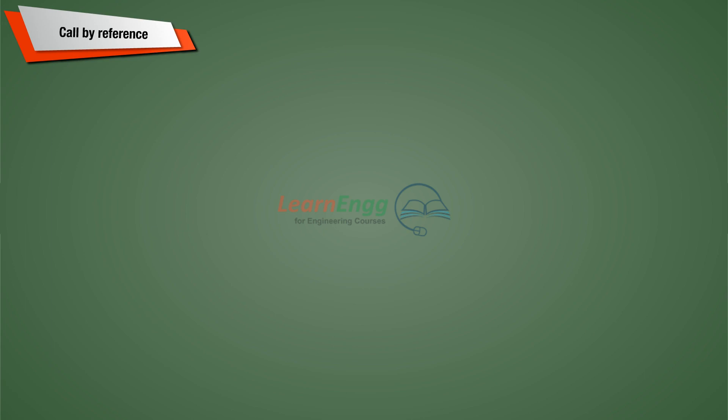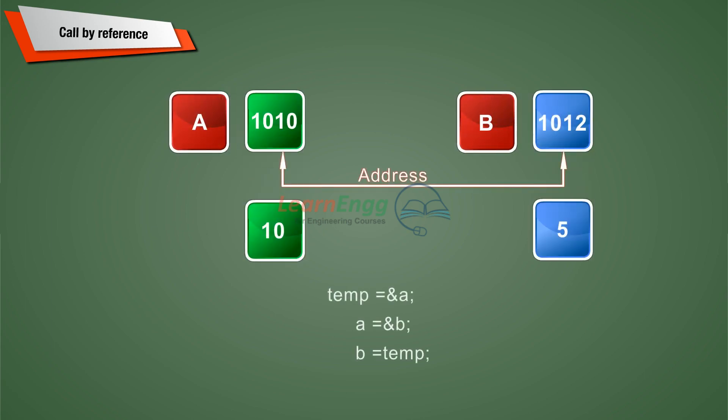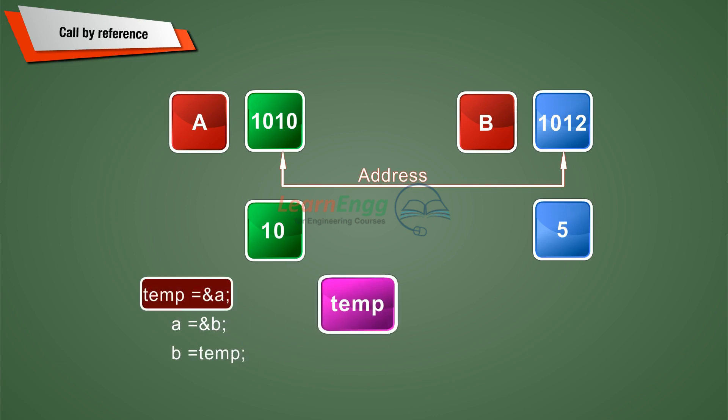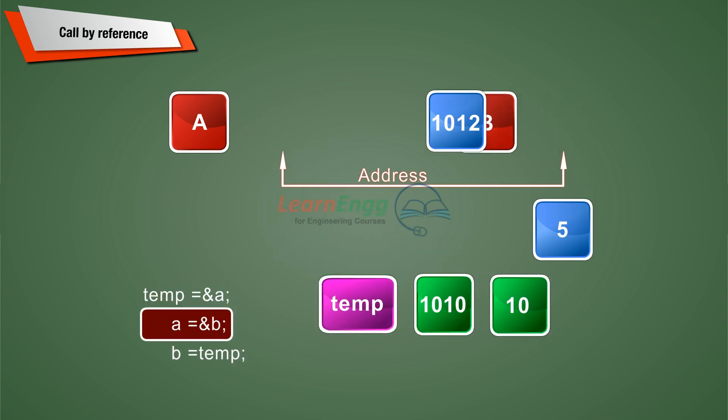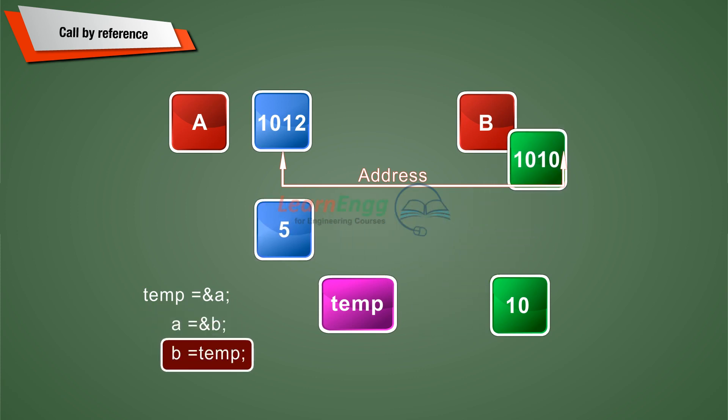Call by reference. The call by reference method of passing arguments to a function copies the address of an argument into the formal parameter. Inside the function, the address is used to access the actual argument used in the call.